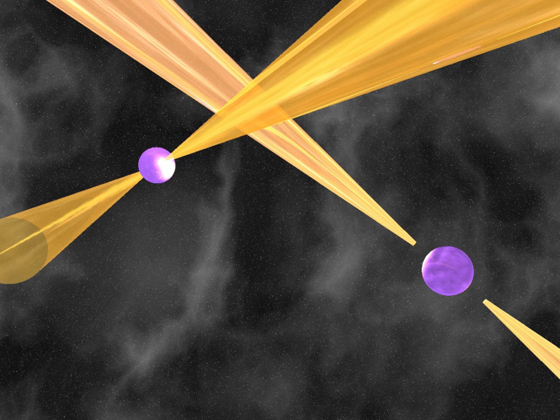Although the binary companion to the pulsar is usually difficult or impossible to observe directly, its presence can be deduced from the timing of the pulses from the pulsar itself, which can be measured with extraordinary accuracy by radio telescopes.